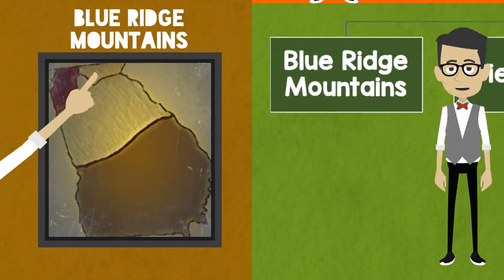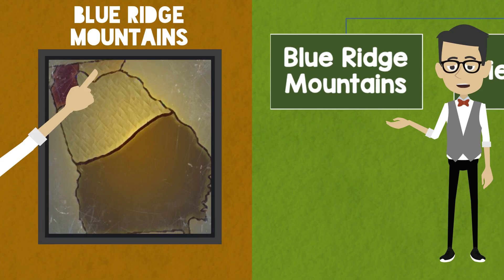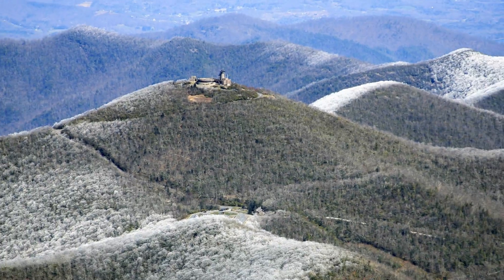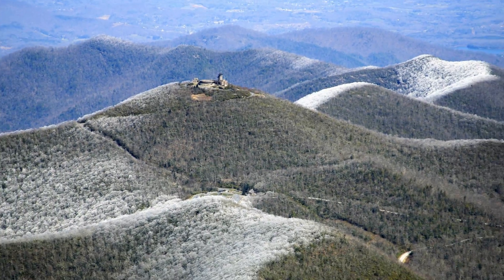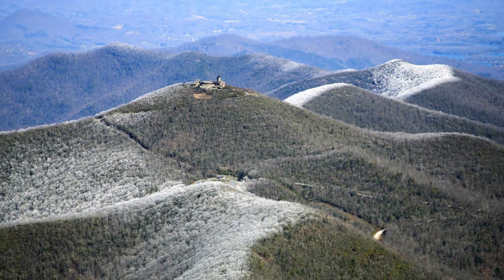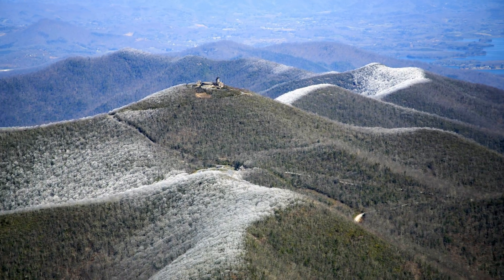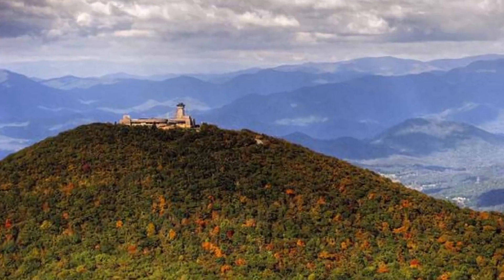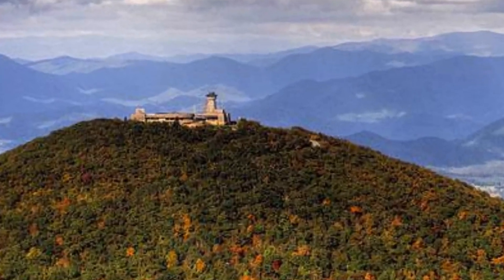To the east of the Ridge and Valley region are the Blue Ridge Mountains. The Appalachian Mountains are within the Blue Ridge Mountain region. Brasstown Bald is the highest point within the state of Georgia, at over 4,784 feet high, and it is in the Blue Ridge Mountain region.